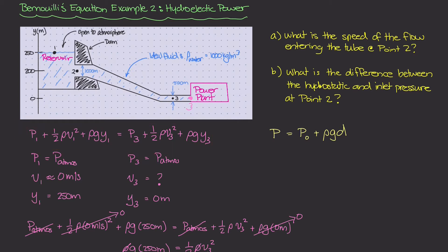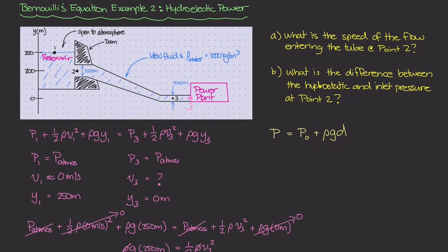We can't just take the P0 value — the atmospheric pressure at the top of the reservoir — plus rho times G times D, which is 50 meters (from 250 down to 200). We can't just use that equation because it only covers the hydrostatic part of this problem. Because the fluid is flowing, we also need to take into account fluid dynamics.